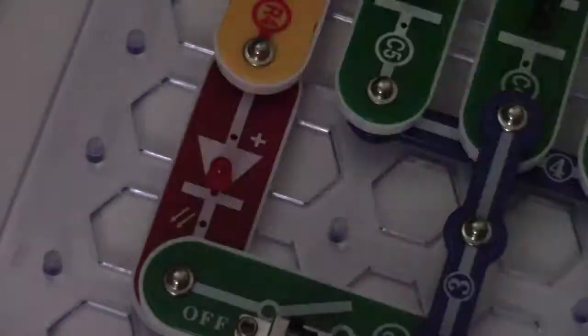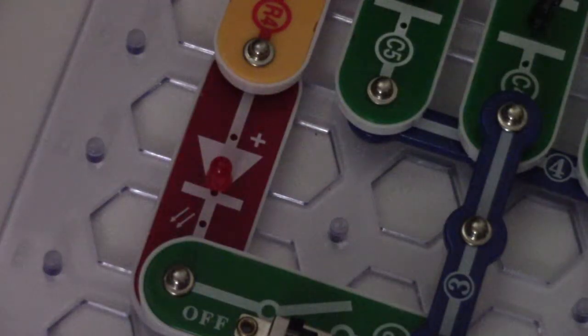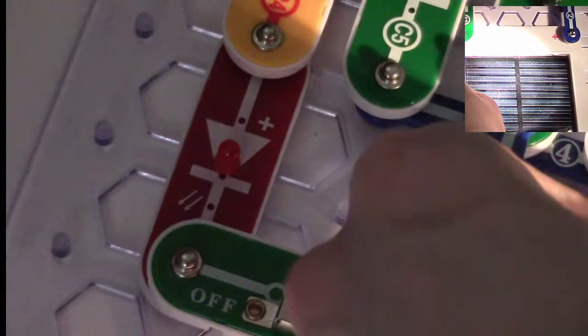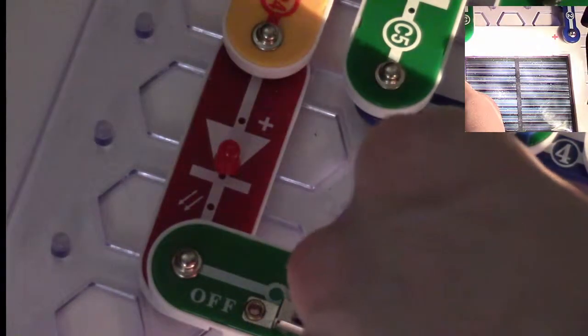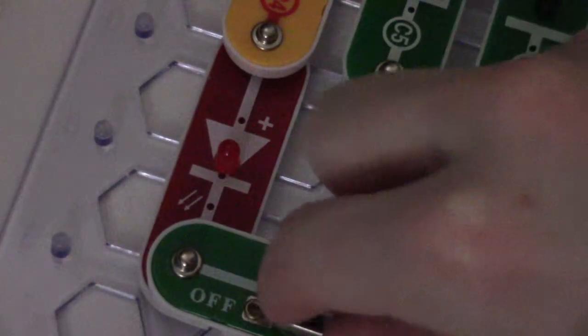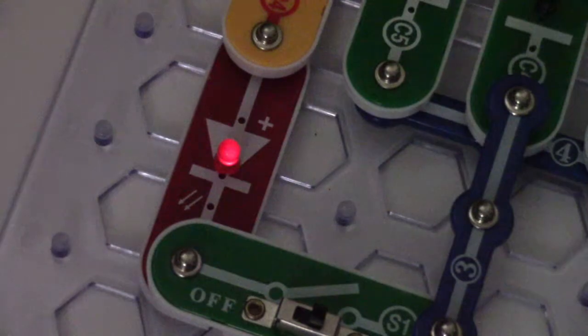And then when I want to recharge it I just shine light back on our solar cell and quickly recharge our capacitors. Come back over to our light and now we've got power back in our capacitors again to light our LED back up.